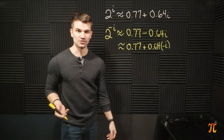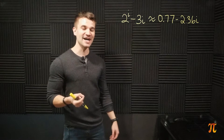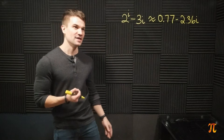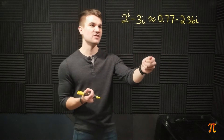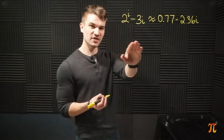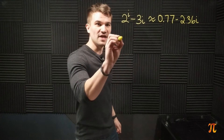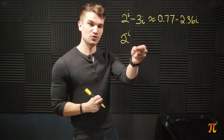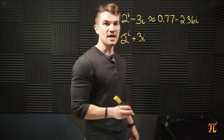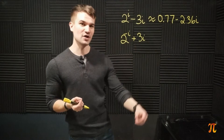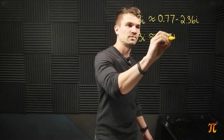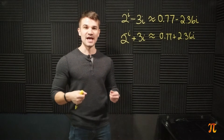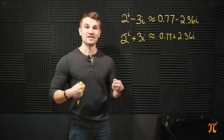Again, we have a statement, and we switch all instances of i to negative i, and the statement remains true. What if our statement involves both i and negative i to begin with? Here we have the complex number 2 to the i-th power minus 3i, which rounds to 0.77 minus 2.36i. If we switch all instances of i with negative i — this i becomes negative i, and minus 3i becomes plus 3i — and indeed, if you put this into a calculator you will get the corresponding conjugate value.